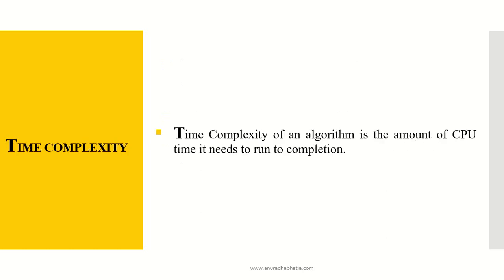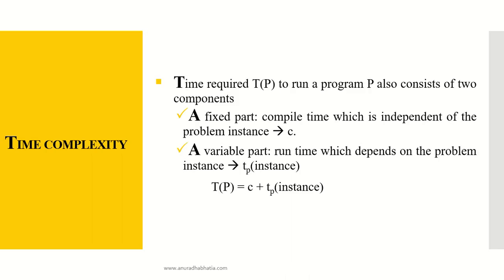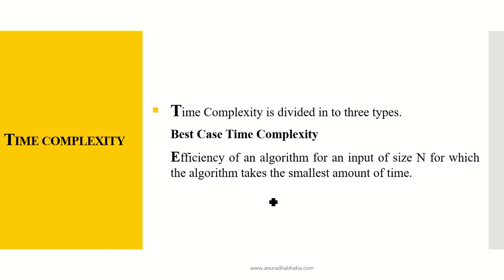Now let's see what is time complexity. Time complexity of an algorithm is the amount of CPU time it needs to run to completion, from start to end. The time required TP to run a program P also consists of two components: the fixed component, which is the compile time independent of the problem instance, denoted by C; and the variable part, which is the runtime depending on the problem instance TP. So time complexity TP equals C plus TP.